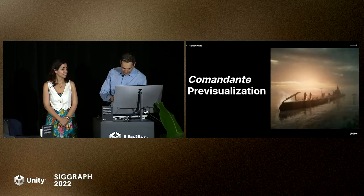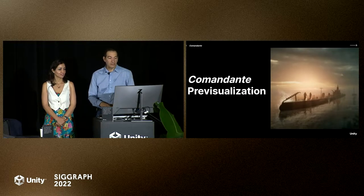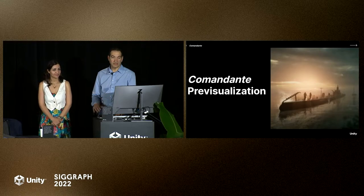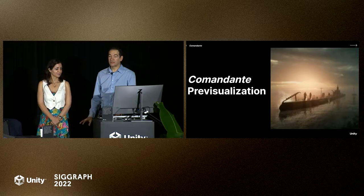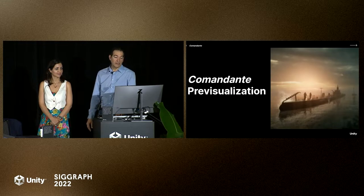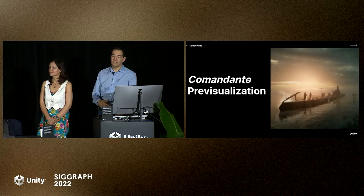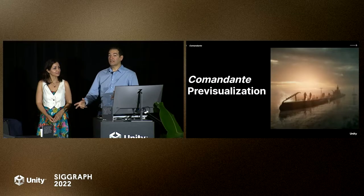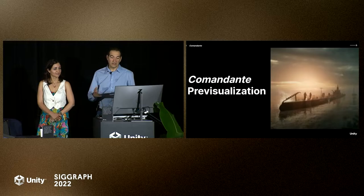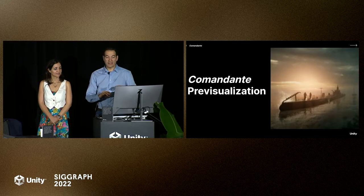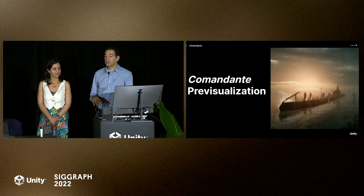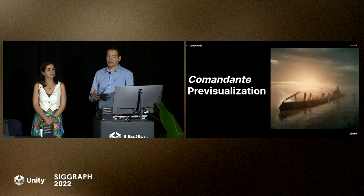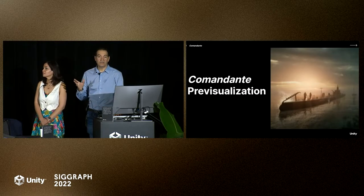Next up, Commandante. This is a pre-visualization for an Italian movie, a World War II film about a submarine — a true story being developed. I'm working remotely with the director, doing virtual cinematography and taking direction in real time. I take the assets and animation done in the virtual art department in Italy and do lighting, VFX, or whatever needs to be for the setup. It's not just about filming and camera angles — it's also about the look and mood. We do several lighting variations within 10 minutes, with really different lighting conditions on the submarine.